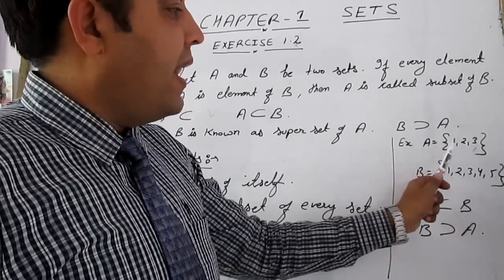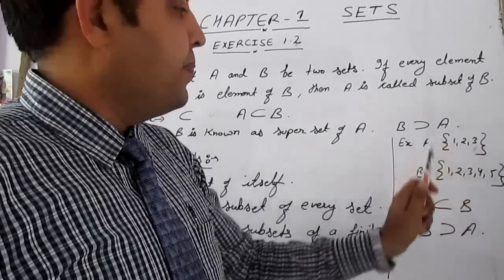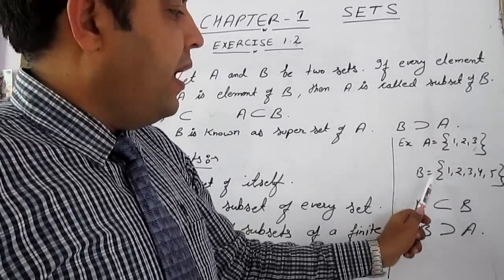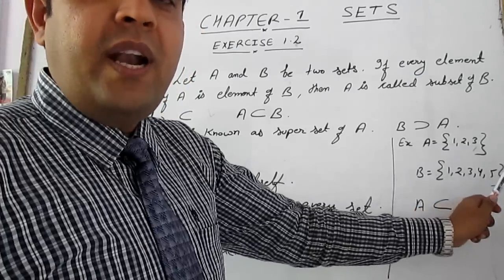Let there is a set A. Elements are 1, 2, and 3. Let there is another set B. Elements are 1, 2, 3, 4, and 5.